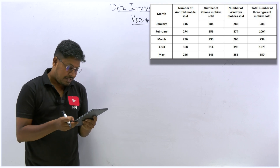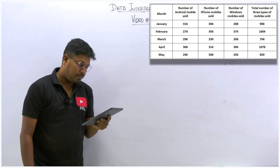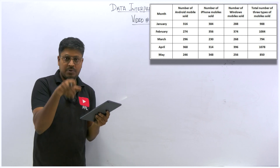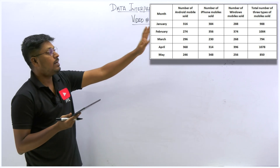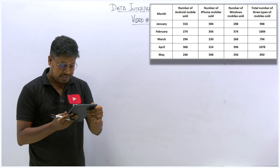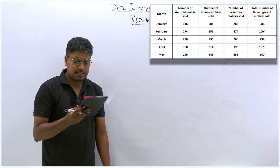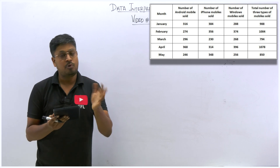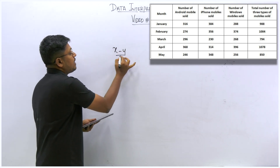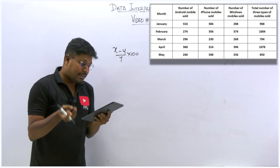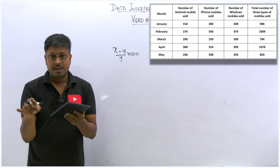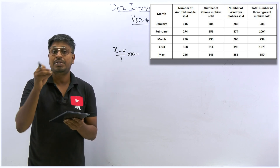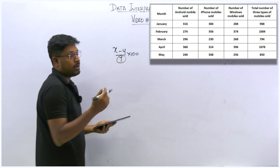The answer is 1227. The next question: find the difference between the sum of total Android mobile sold across all months together and the sum of Windows mobile sold. Just add all Android values and all Windows values and find the difference. The third question: the sum of total mobile phones sold in January and February together is what percentage more or less than Android mobiles sold across all months? The formula is (x minus y) divided by y times 100, where the comparison value always comes in the denominator.